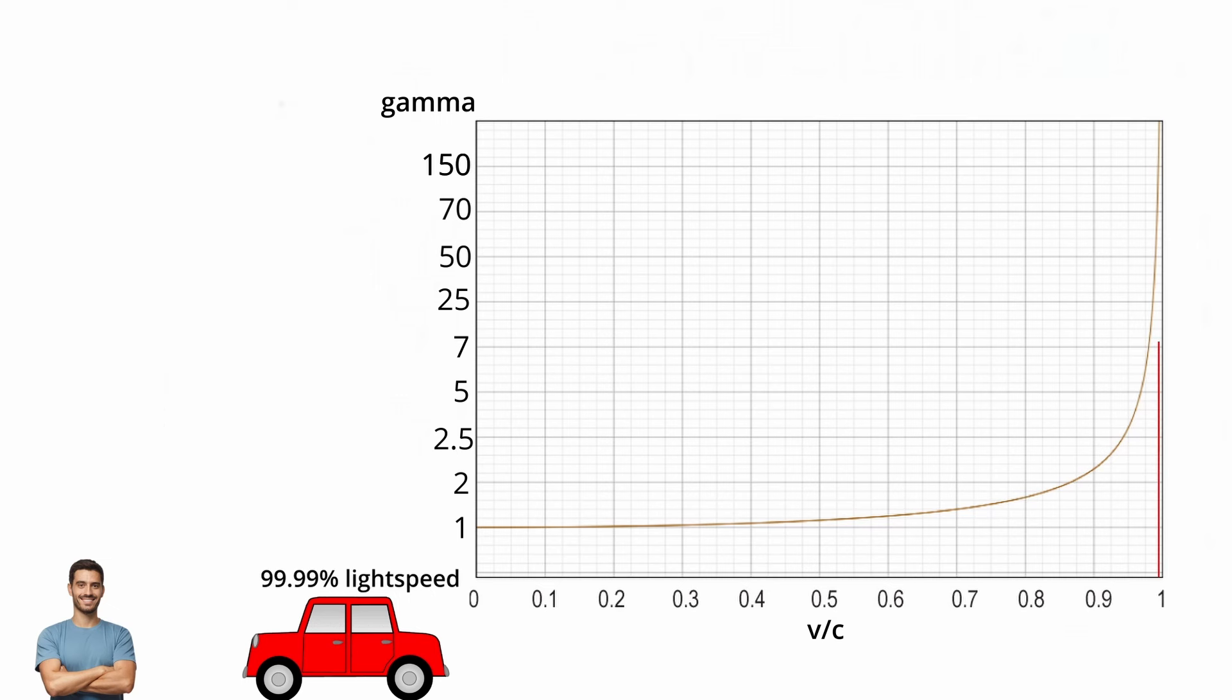And at 99.99%, the gamma value would be 70.7, meaning that while 70.7 seconds passes outside, only 1 second passes for the man driving.